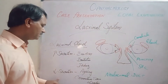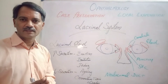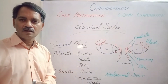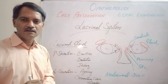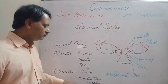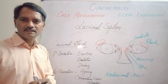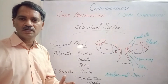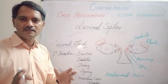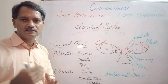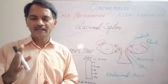Decreased secretion is usually seen in aging patients, as most glands in the body decrease their secretions with age. It may also be due to connective tissue disorders like rheumatoid arthritis, SLE, polyarteritis nodosa, and Wegener's granulomatosis, all of which affect this gland along with other glands in the body. How do we diagnose a dry eye?